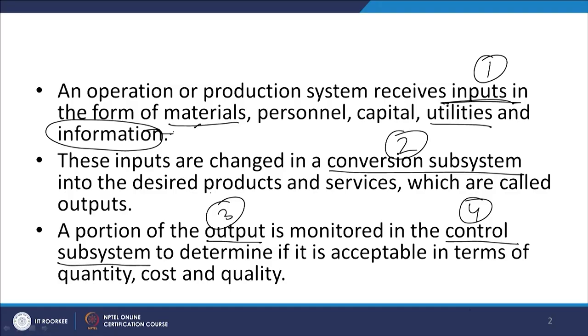So these are the input subsystems: material, personnel, capital, utilities, and information. For each of these inputs you can have a separate subsystem, and we will discuss that in the next figure. The second important subsystem is the conversion subsystem, where these input resources are processed so that you can get the desired products and services.